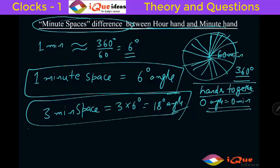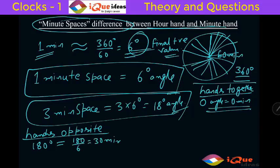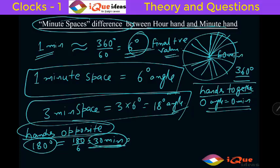If the hands are opposite to each other, when the hands are opposite, the angle between them is 180 degrees. Here we take the final positive value. So 180 degrees — since 6 degrees is 1 minute, 180 degrees will be equal to 180 divided by 6, that is 30 minutes. So when the hands are opposite they are 30 minute spaces apart.